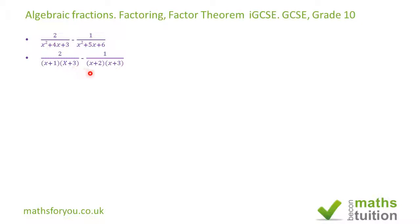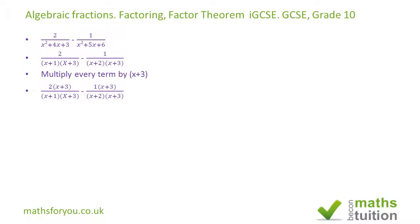I can see that (x+3) is common to both denominators. If we multiply each term by (x+3), similar to what you do for equivalent fractions, we can then cancel out the (x+3). We end up with 2 over (x+1) minus 1 over (x+2).